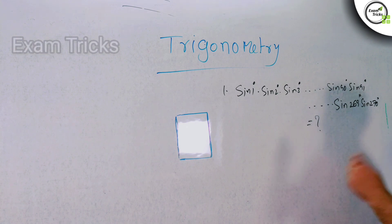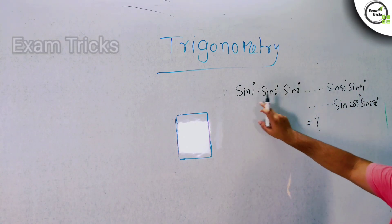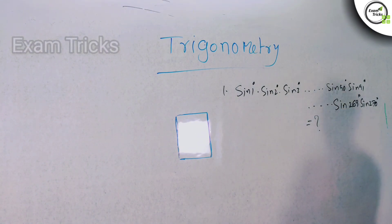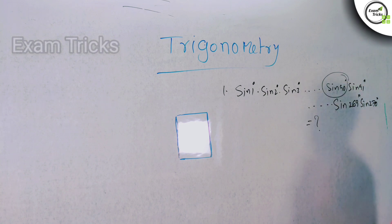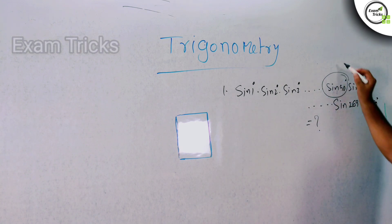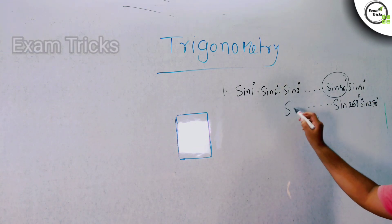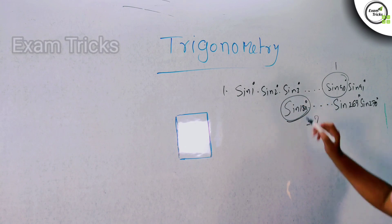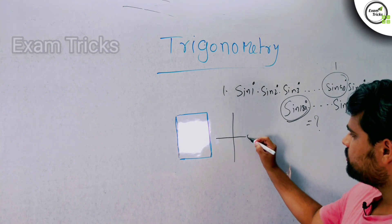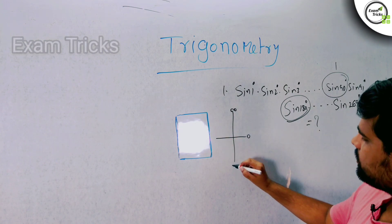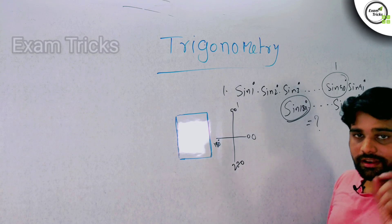Now observe carefully. The series contains sin180°. Sin90° = 1, sin0° = 0, and sin180° = 0. Since sin180° = 0 is in the product, the whole product becomes 0. This is the hidden detail — it is not obvious at first glance.